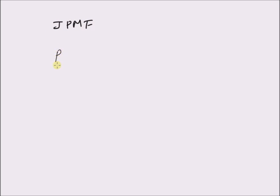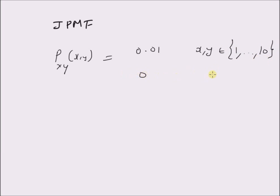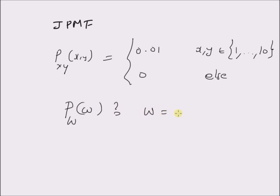In this example, given the joint probability mass function, P(x, y) is equal to 0.01 for values of x, y from 1 to 10, and 0 elsewhere. Given this joint probability mass function, we want to derive the probability mass function of a new random variable W, defined as the minimum of the original random variables X and Y.